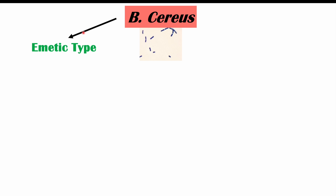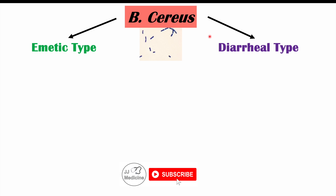Before we talk about the signs and symptoms, we have to discuss certain types of infections we can get from Bacillus cereus. One is what we call the emetic type — emetic refers to vomiting, so that describes what happens with this particular type. And then the other one is the diarrheal type, which also tells us what happens with that type.